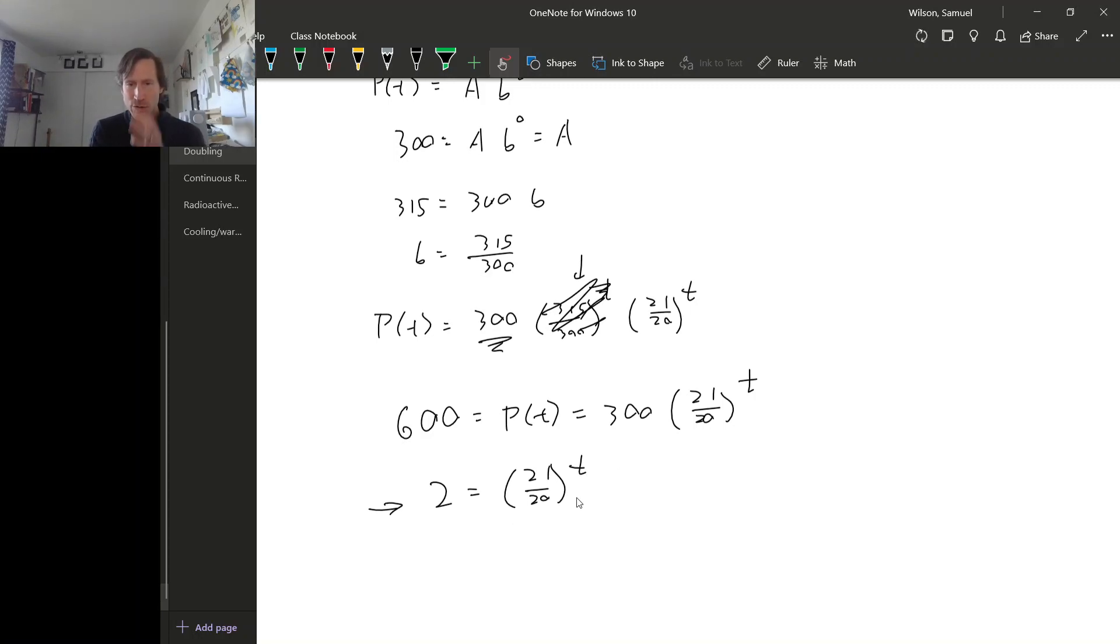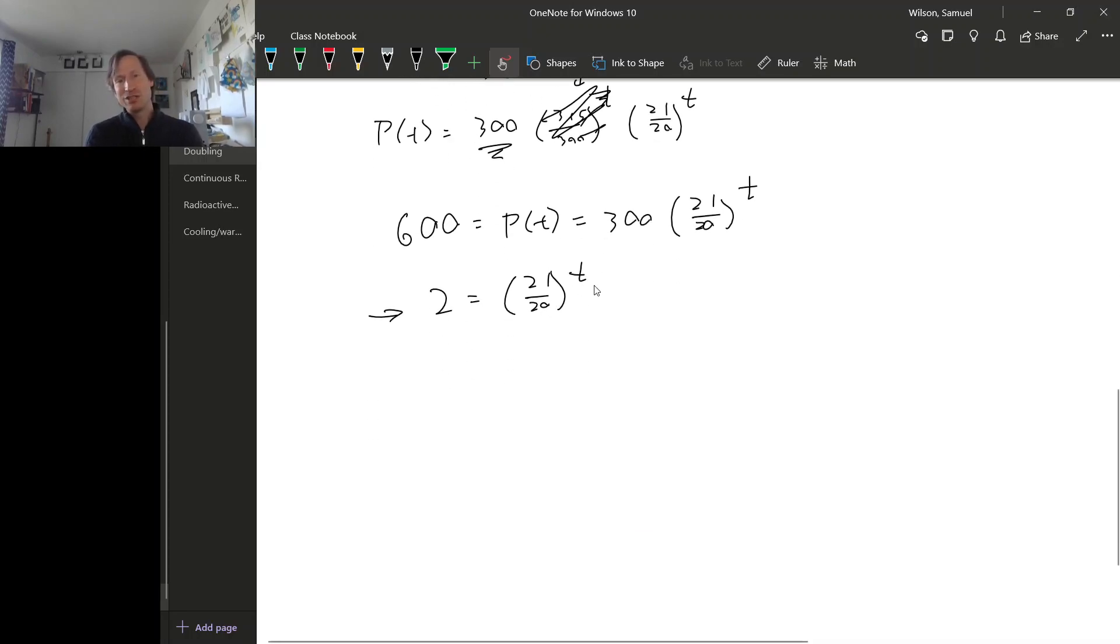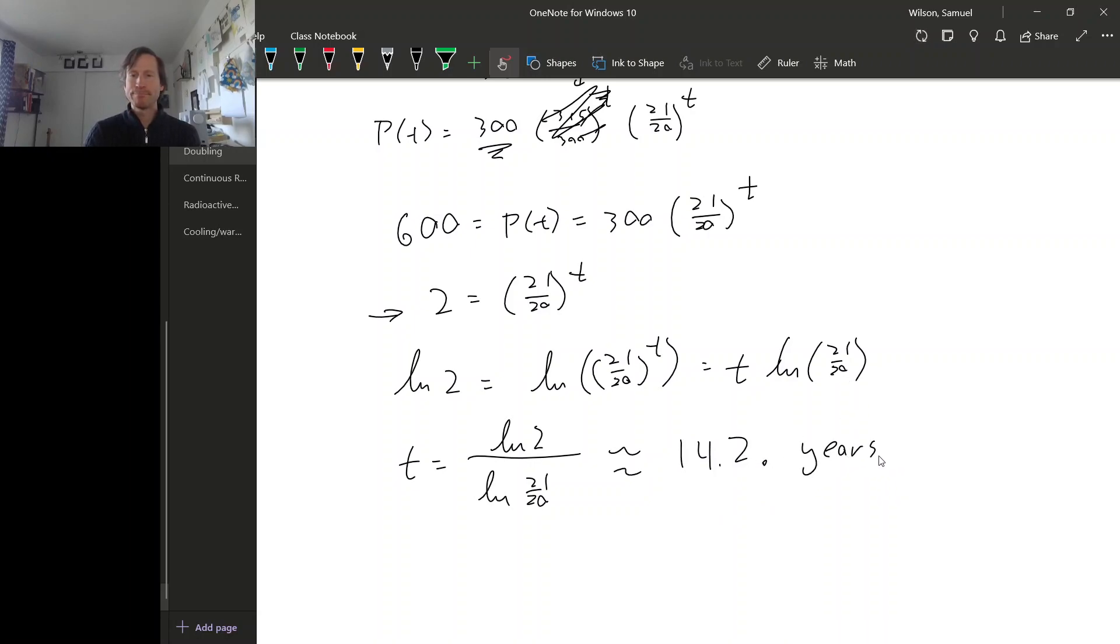So now we can divide both sides by 300. So we get 2 equals 21 over 20 to the T. Okay, so how are we going to find this T? This T is in an exponent and to solve an equation when the variable is in the exponent you have to use a logarithm. So which logarithm should we use? Well it seems like there's no nice choice so let's just use natural log. So we get natural log 2 equals natural log of 21 over 20 to the T. But then we can move that T down in front so we get T natural log 21 over 20. And so T is natural log 2 over natural log 21 over 20. So we get natural log 2 divided by natural log 21 over 20, and I get 14.2 about. So about 14.2 years.